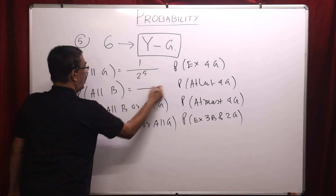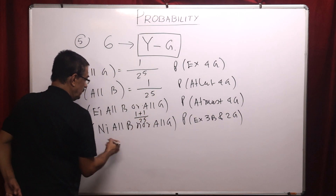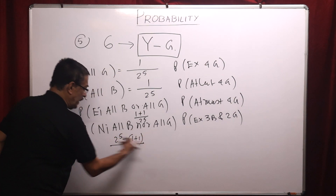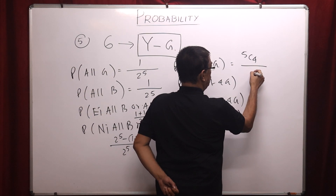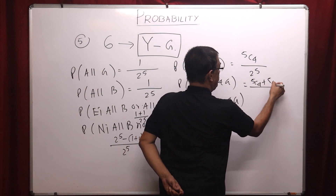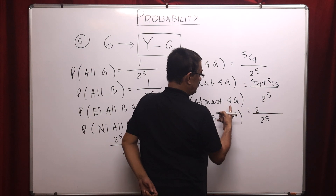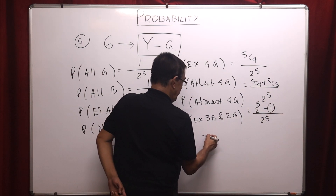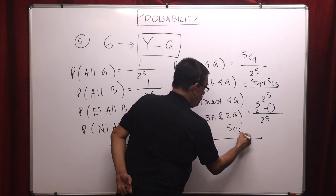All girls: one case. All boys: one case. Either all boys or all girls: 2 over two to the power five. Neither: two to the power five minus 2. Exactly four girls: 5C4 over two to the power five. At least four girls: 5C4 plus 5C5, all over two to the power five. At most four girls: I cannot consider five girls, so two to the power five minus one case.